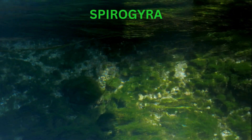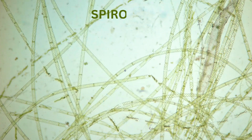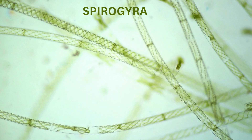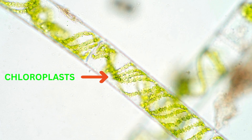Here are some key features and characteristics of Spirogyra. Cellular structure: Spirogyra consists of long, unbranched filaments composed of cylindrical cells. The cells are joined end-to-end, forming chains. Each cell has a central vacuole, a nucleus, and a large, ribbon-like chloroplast with a spiral arrangement. This adaptation allows for optimal light absorption and photosynthesis.